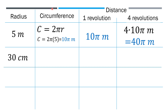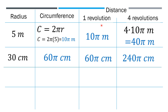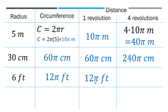When the radius is 30 centimeters, 30 times 2π gives us 60π centimeters, and that remains to be the distance after one revolution. And 60π times 4 revolutions gives us 240π centimeters as the distance. For 6 feet, 2π times 6 gives us 12π feet. And 12π feet represents one complete revolution. For 4 revolutions, 12 times 4 gives us 48, so 48π feet is the distance after 4 revolutions.